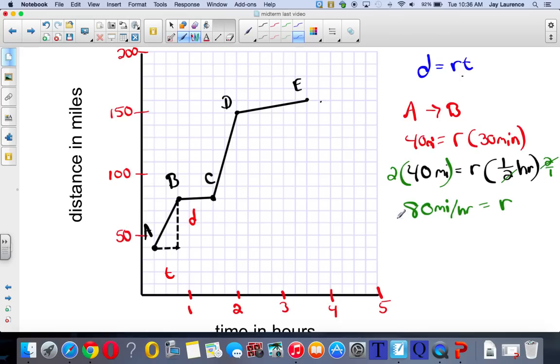Let's try another one. Let's try from B to C. That's a hard one. My distance is 0. And my time is 45 minutes. I think the rate from B to C is going to be 0 miles per hour. Right? Because I'm not going anywhere.